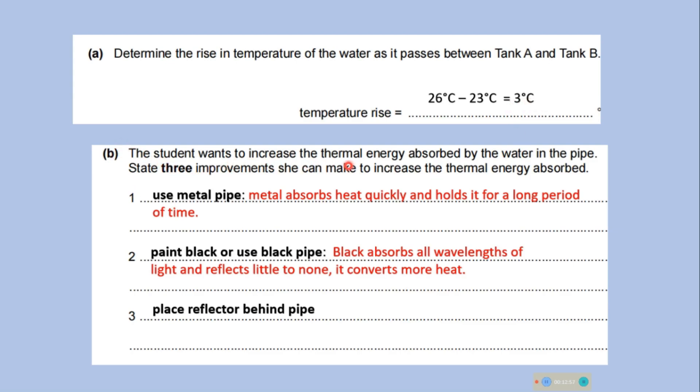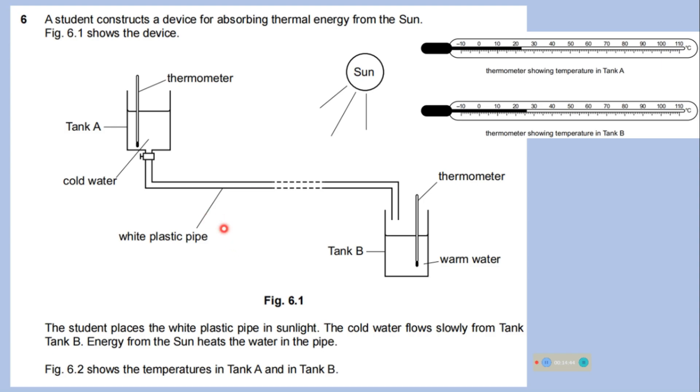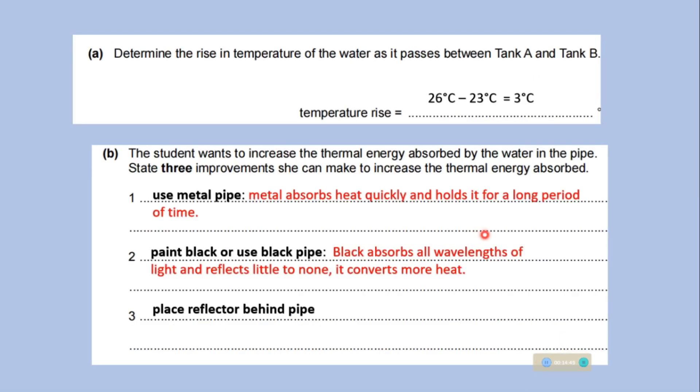The student wants to increase the thermal energy absorbed by the water in the pipe. The state 3 improvement she can make to increase the thermal energy absorbed. So, first is use metal pipe. Because metal absorbs heat quickly and holds it for a long period of time. Second, a change what a student can make. Paint black or use black pipe. Because black absorbs all wavelengths of light and reflect little to none. It converts more heat. Third, place reflector behind pipe. As if you put a reflector behind pipe, it will reflect all the sunlight toward the pipe. So, it will help to increase the thermal energy absorbed by the water in the pipe.